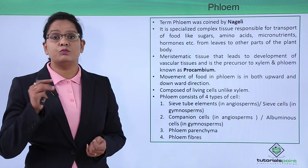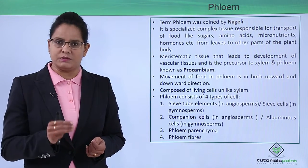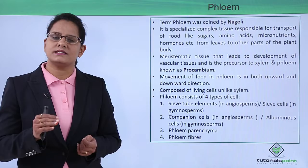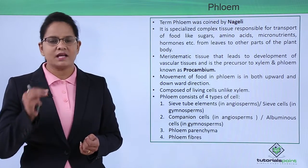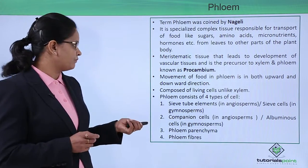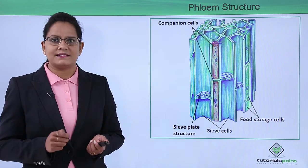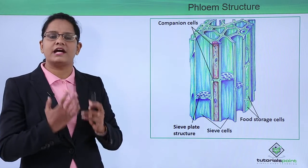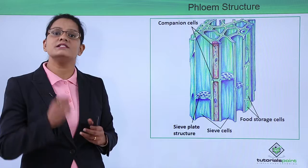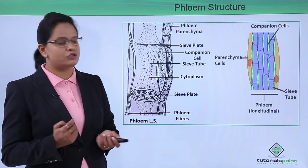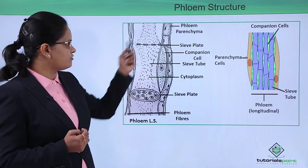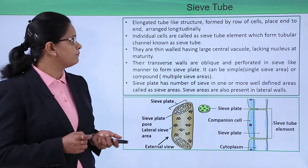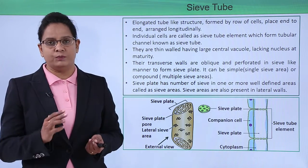Phloem is made up of four types of cells: sieve tube elements in angiosperms and sieve cells in gymnosperms, companion cells in angiosperms and albuminous cells in gymnosperms, phloem fibers, and phloem parenchyma. You can see the structure — it is complex. The sieve cells, food storage cells, and companion cells together form one unit. In longitudinal section also, you can see different types of cells joined together functioning as a unit to transport food.